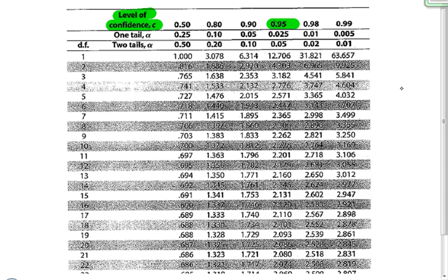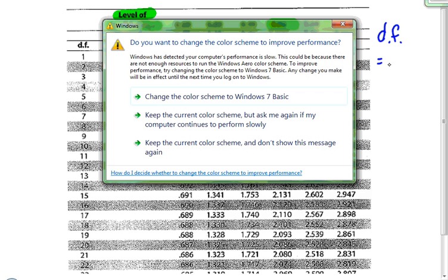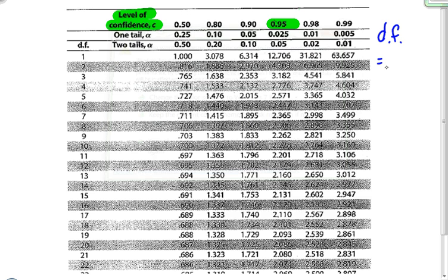The second thing that we need to consider is something called degrees of freedom. I'm just going to abbreviate it with DF. Degrees of freedom, when you're working to find a confidence interval for means, is n minus 1, or your sample size minus 1. So in this example, our sample size was 16, so 16 minus 1 is 15, and our degrees of freedom is 15.